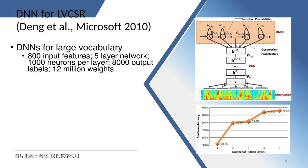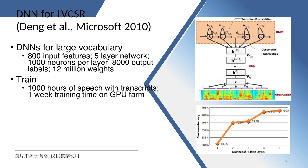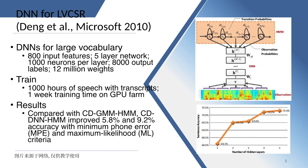DNN models for large vocabulary have 800 input features, a 5-layer network, 1,000 neurons per layer, 8,000 output labels, and 12 million weights. Training data includes 1,000 hours of speech with transcriptions, requiring one week of training time on a GPU farm. Compared with CD-GMM-HMM, the new CD-DNN-HMM system improved accuracy by 5.8% and 9.2% using minimum phone error (MPE) and maximum likelihood criteria respectively.